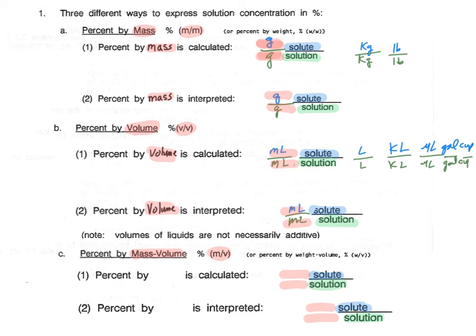The last one is the percent by mass volume. Now percent mass volume uses both mass and volume, and this one we don't generally change the units. This one is almost always in grams per milliliter.